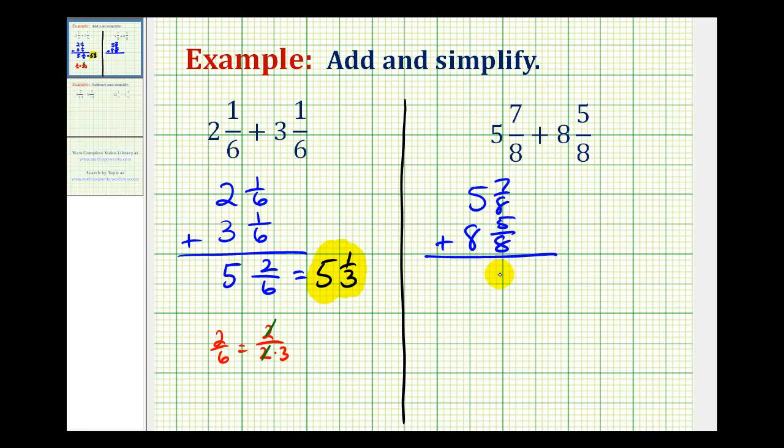Again, we already have a common denominator. So, we can go ahead and add these fractions. The denominator is going to stay eight. And the numerator will be seven plus five, which is equal to 12. And then, five plus eight is equal to 13.